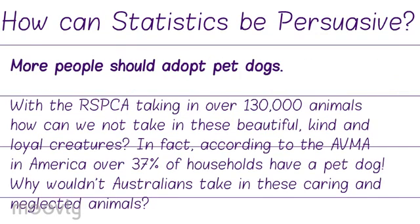Let's have a look at an example. Let's say I'm writing on the topic 'more people should adopt pet dogs.' With the RSPCA taking in over 130,000 animals, how can we not take in these beautiful, kind and loyal creatures? In fact, in America, over 37% of households have a pet dog. Why wouldn't Australians want to take in these caring and neglected animals? It becomes even more persuasive when emotive language is added, such as 'neglected animals' and 'beautiful, kind and loyal creatures.'